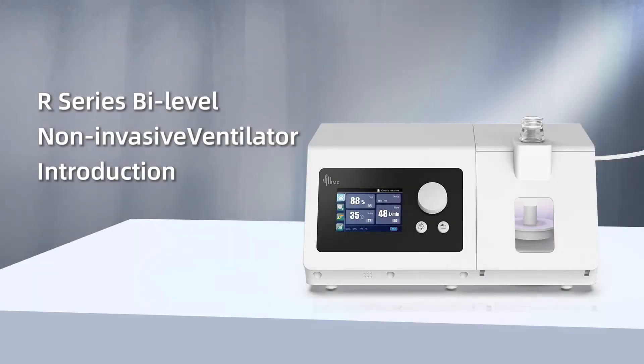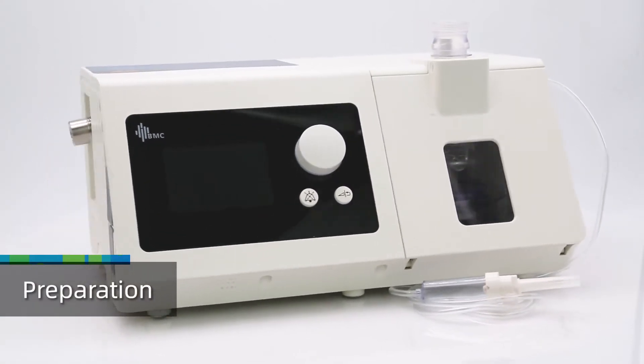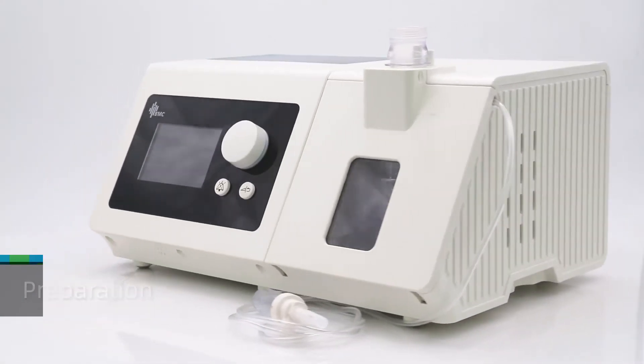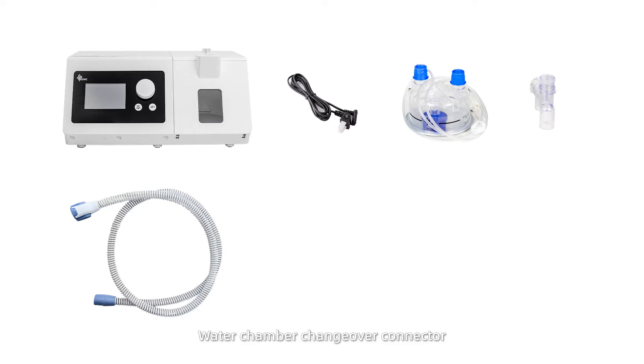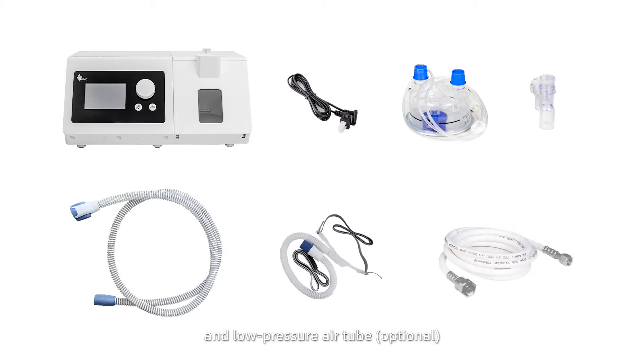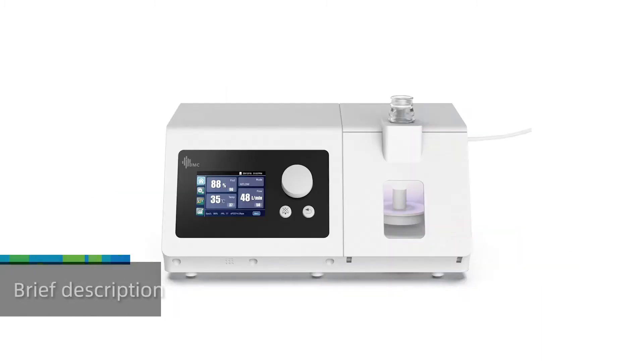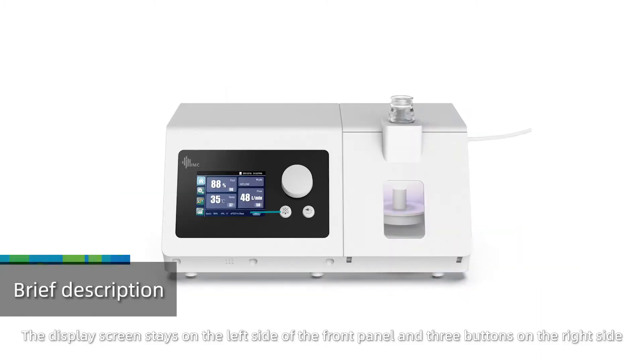R-series bi-level non-invasive ventilator introduction. Preparation: Take out the main device, heated tube, power cord, water chamber, changeover connector, patient interface, and low-pressure air tube. Brief description: The display screen stays on the left side of the front panel.